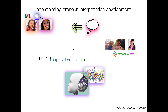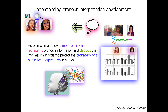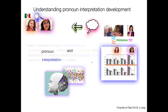Here we're going to implement how a model listener is going to represent pronoun information and deploy that information in order to predict the probability of a particular interpretation in context, which we can then match against these rates of choosing the subject interpretation.